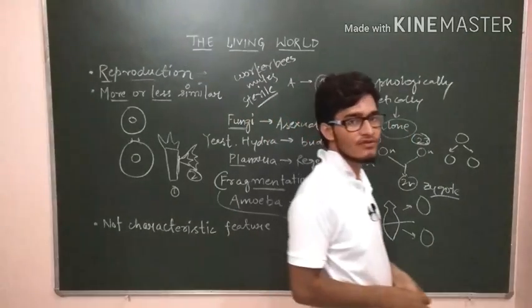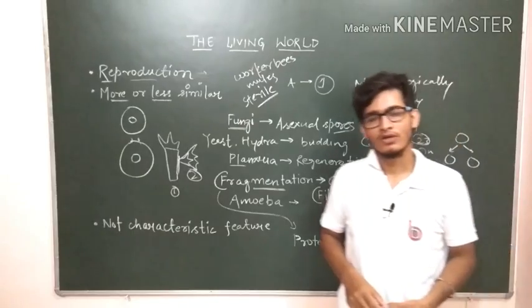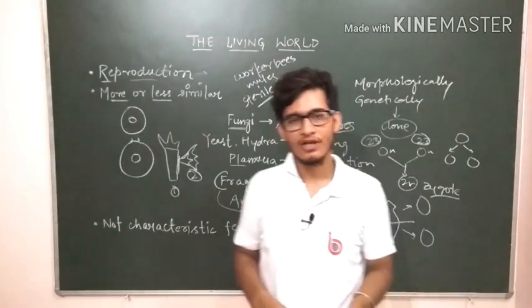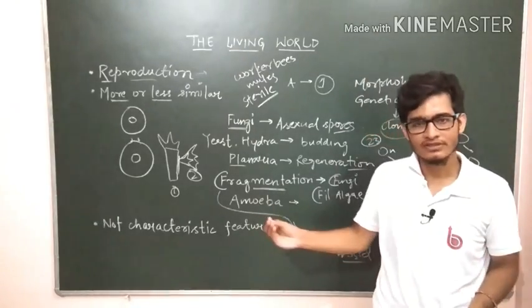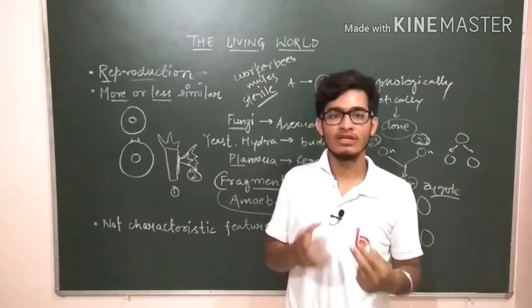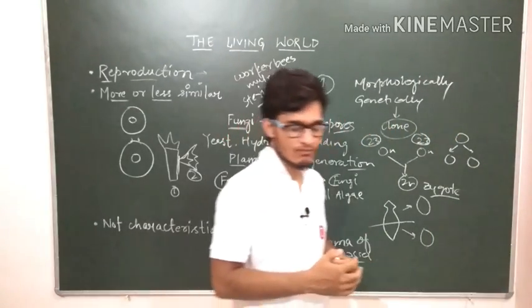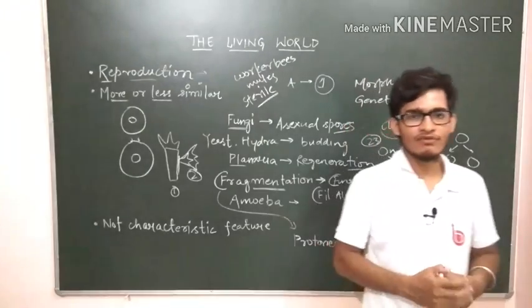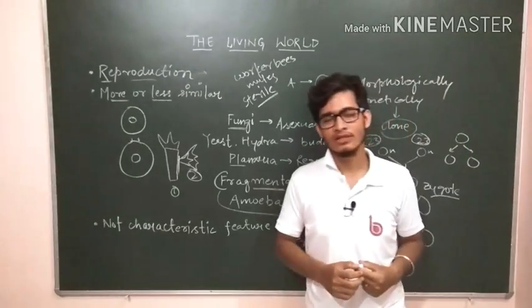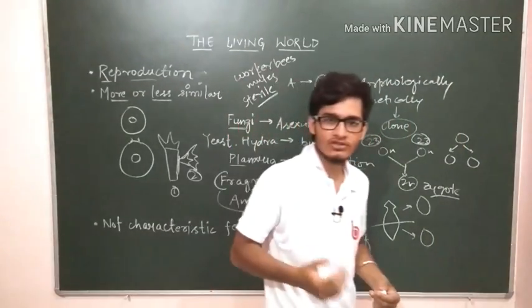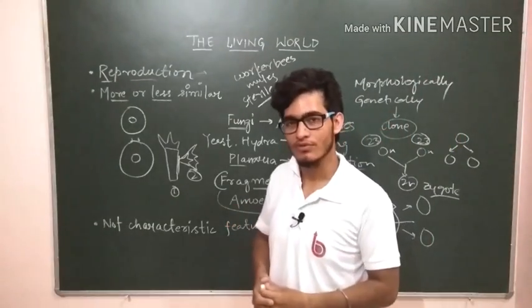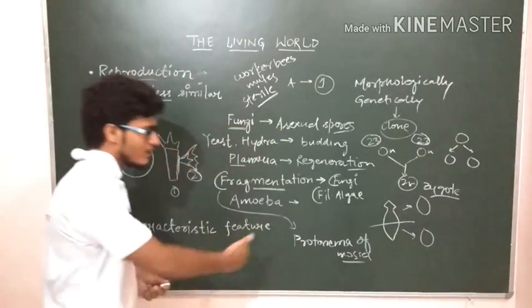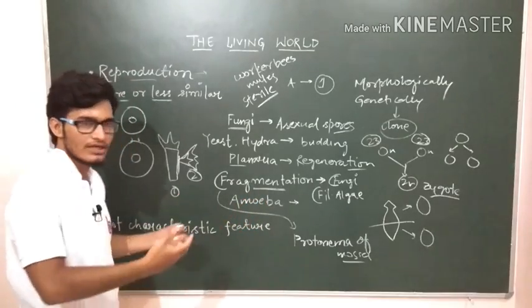In the further classes we will be talking about metabolism, consciousness, cellular organization, and some other important events or features. We will try to find out whether it is a characteristic feature or not. After that we will be talking about binomial nomenclature and some sort of taxonomical hierarchy, the process of taxonomy and taxonomical aids, after which this chapter is going to be completed.